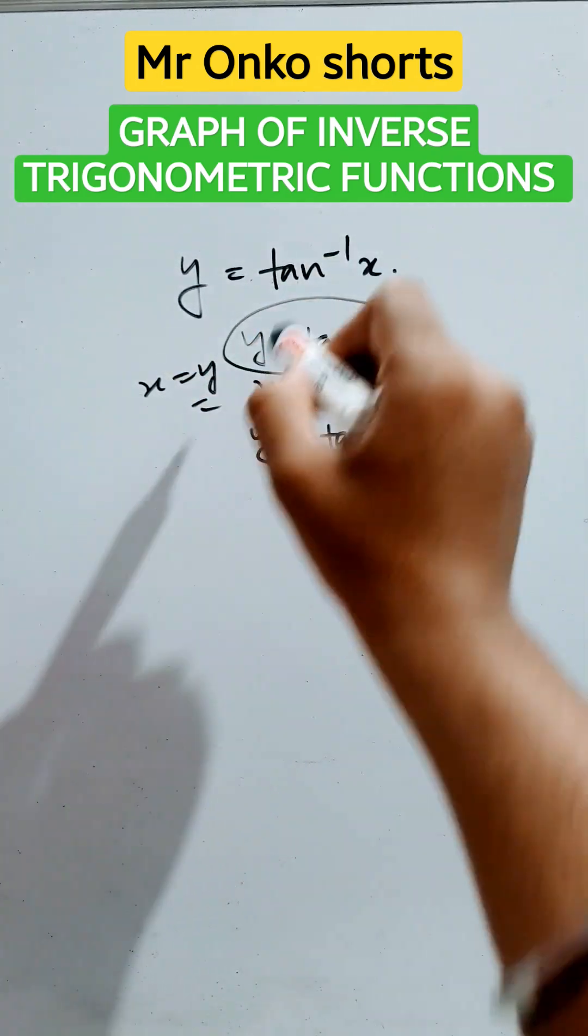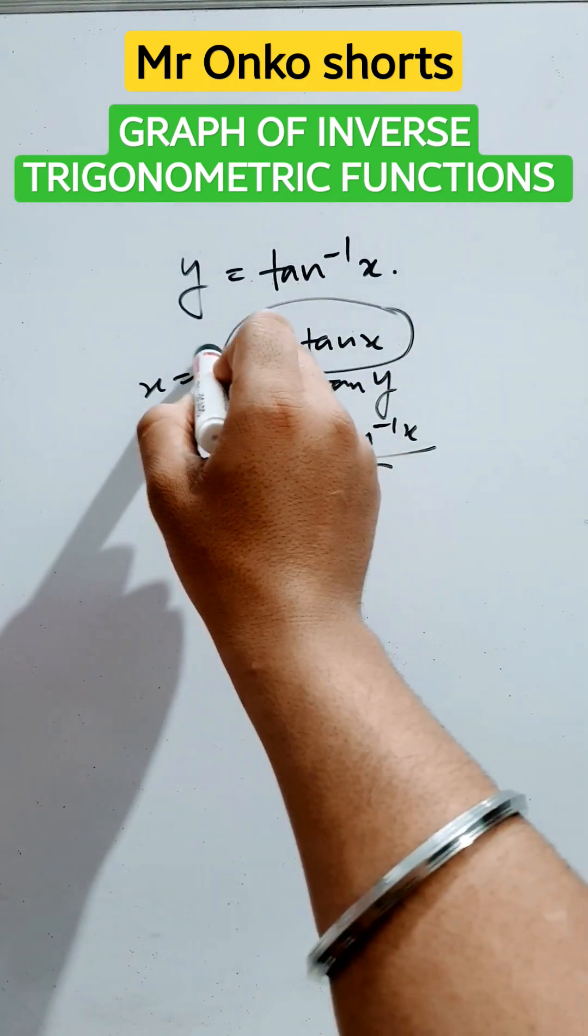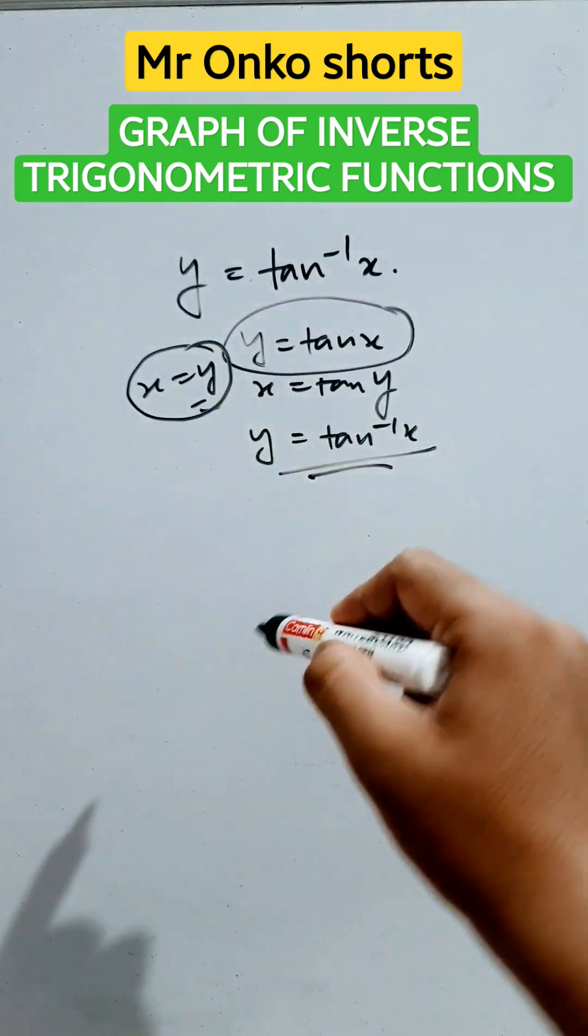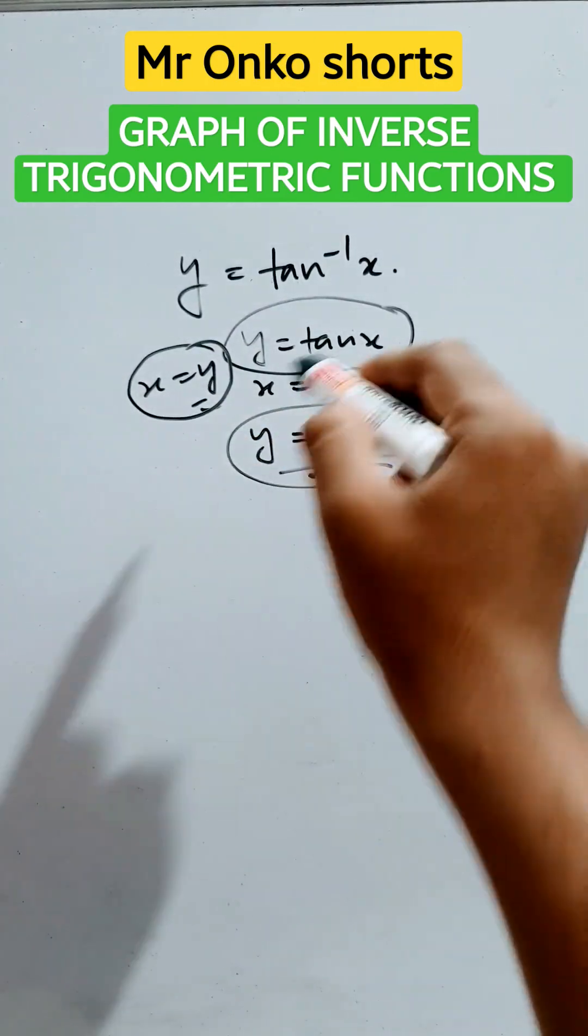So if we know how to draw y equals tan x graph, then just take the mirrored image with respect to this axis. Then it will be the graph of y equals tan inverse x.